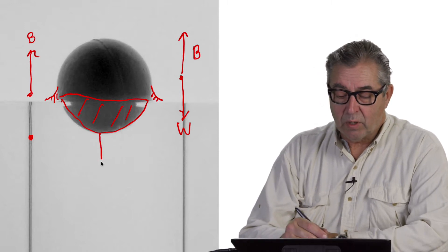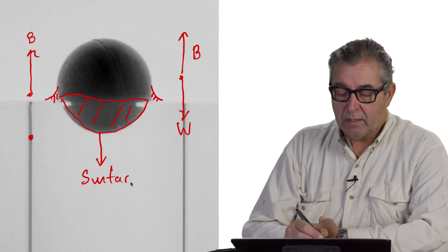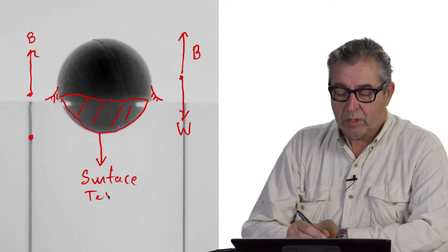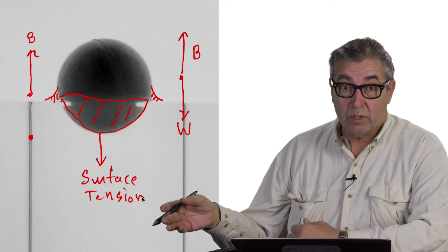This downward surface tension force acting on the ball creates a net downward force which does work on the ball as it moves downward.